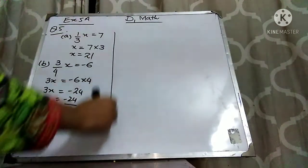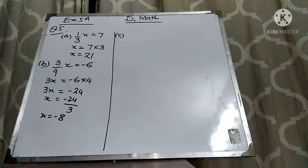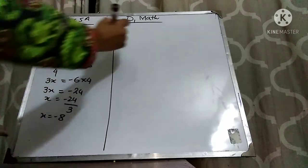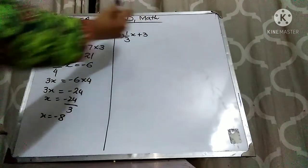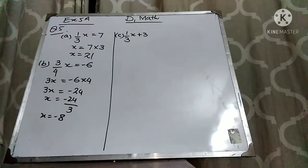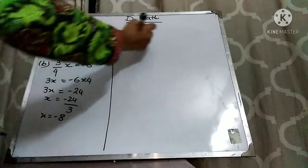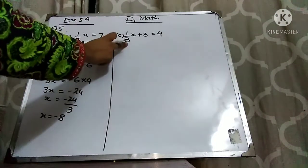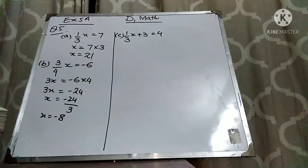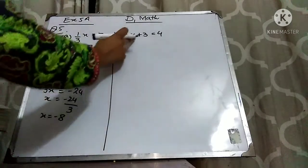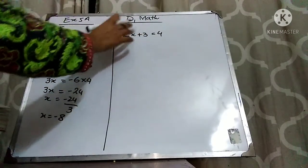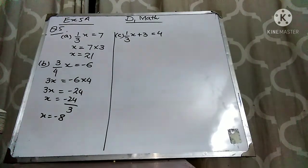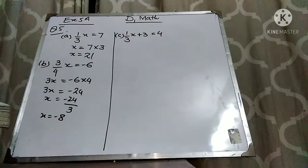Now let's come to Part C. Part C is 1/3x + 3 = 4. Here you can do two operations. Whenever you have a variable with both division and addition or subtraction, first you have to move the things which are adding or subtracting. Afterwards you move the things which are multiplying or dividing.